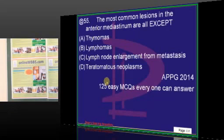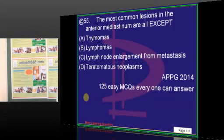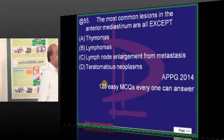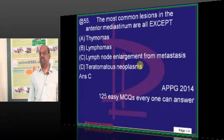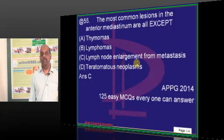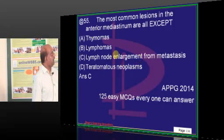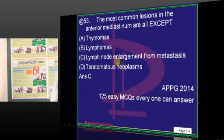The Four T's: Teratoma, Thymoma, Terrible Lymphoma, and Retrosternal Thyroid — they are all anterior mediastinal masses. Lymph node enlargement and metastases are generally considered to stay in the middle mediastinum rather than the anterior mediastinum.